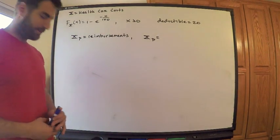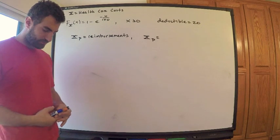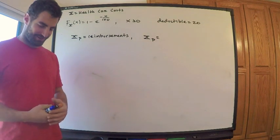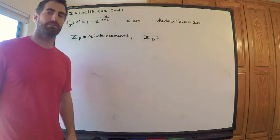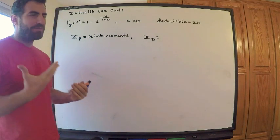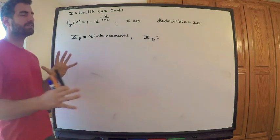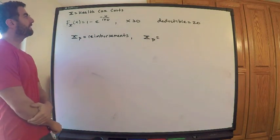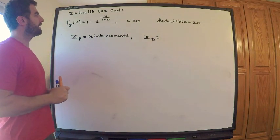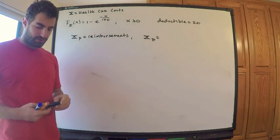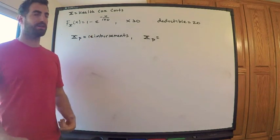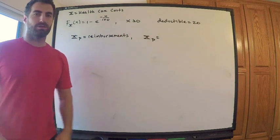Let's answer this question — this is another one where I messed it up, so disregard the hair, I may have just woken up. This question kind of bothers me, but I'll probably never forget it now. We have a random variable X representing healthcare costs, and this is the cumulative distribution function for those costs. It's an exponential CDF — you should recognize that — and X is greater than zero. The deductible is 20.